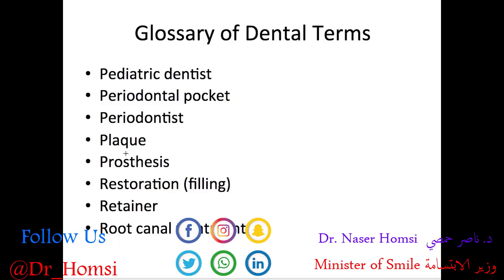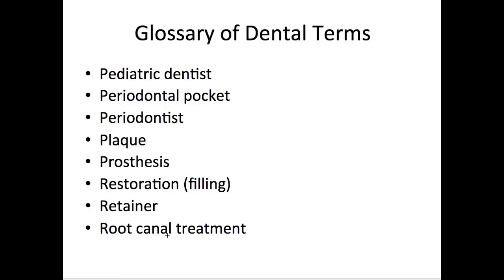A prosthesis is an artificial replacement of a tooth, teeth, or even missing soft and hard tissues. A restoration is a treatment that repairs or replaces teeth — also called a filling. A retainer is a removable device worn in the mouth to prevent teeth from moving out of position, often used after orthodontic treatment. Root canal treatment is a type of treatment that removes the tooth nerve or pulp and seals that space with some inert material; a crown is usually recommended afterward, especially for posterior teeth, to prevent the tooth from breaking.